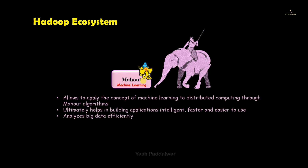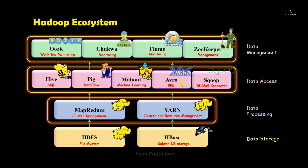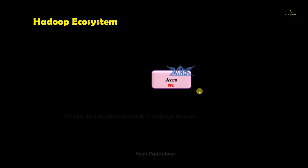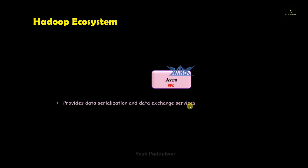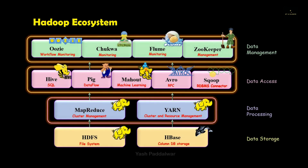The next component is Avro, also called remote procedure call. Avro acts as a data exchange service and provides data serialization. It has a rich data structure with a binary data format that is fast and compact. In simple words, it is used for exchange of big data between different programs that may or may not be written in the same language.